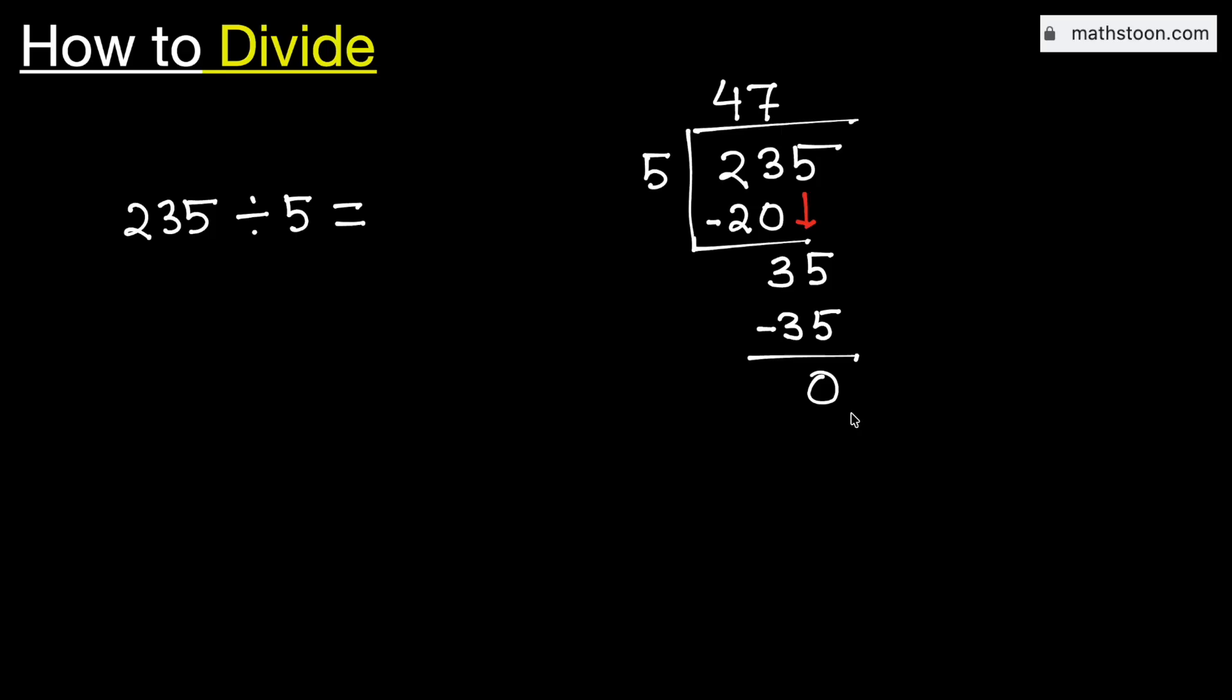As we have got the number 0 and there is no number to bring down here, so we will stop. Therefore, 235 divided by 5 is equal to 47. And this is our final answer.